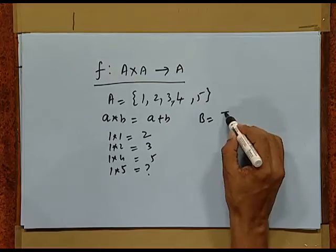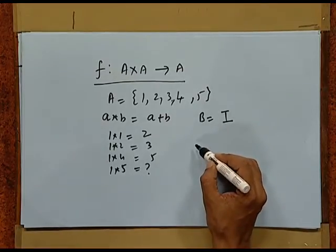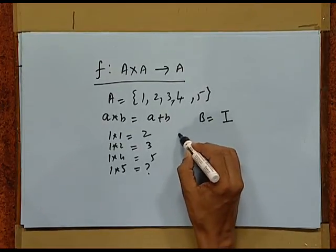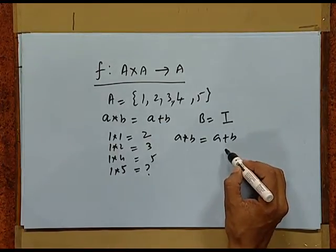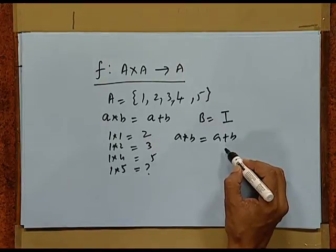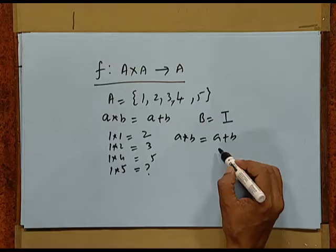For this set, this is not a binary operation, but with slight modification we can make it binary. Suppose our set B is the set of all integers. In this case, the same operation A star B = A plus B does make a binary operation, because in this case the output of the two elements is ultimately a member of the set B. So essentially for any binary operation the output has got to be inside the set.